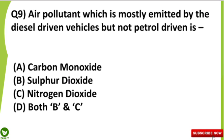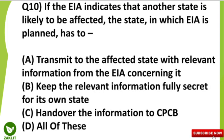We are moving towards the final question of this quiz contest. The final question is: if the EIA — that is, Environmental Impact Assessment — indicates that another state is likely to be affected, the state in which the EIA is planned has to do what?